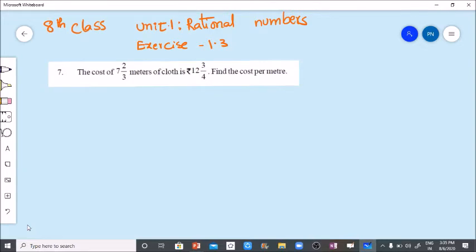Dear students, here is a problem in 8th class unit 1 rational numbers in exercise 1.3. The problem is: the cost of 7 2/3 meters of cloth is 12 3/4 rupees.